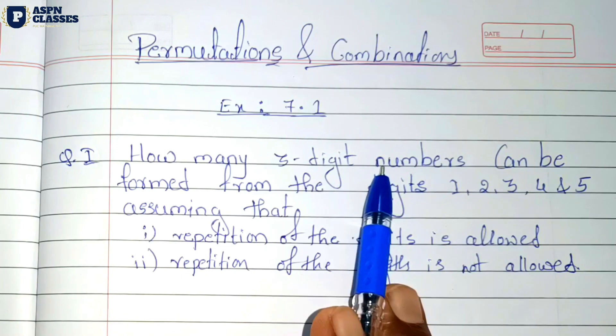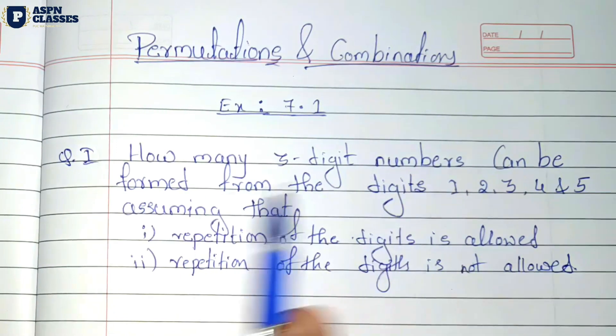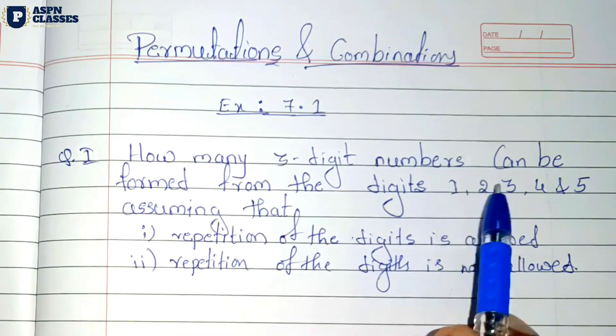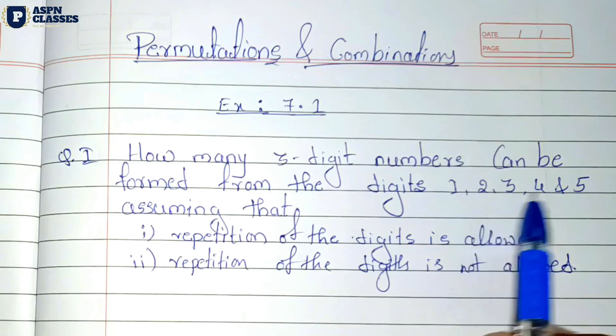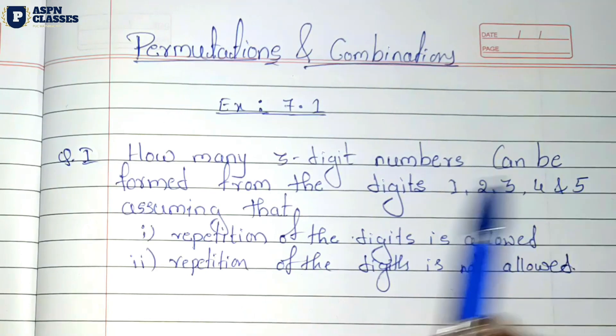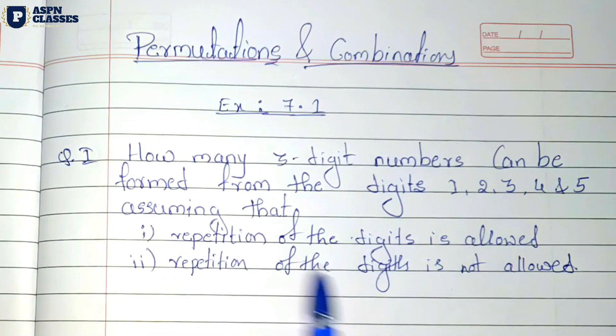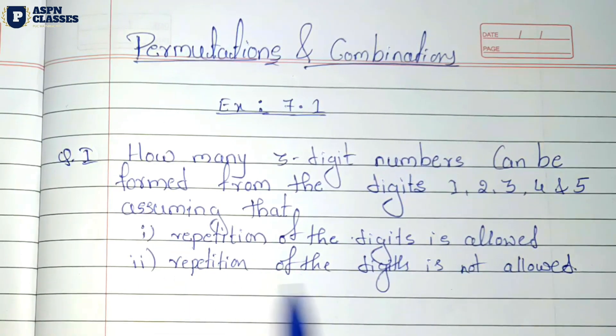How many 3-digit numbers can be formed from the digits 1, 2, 3, 4, 5? The question has two parts: one where repetition is allowed and one where repetition is not allowed.